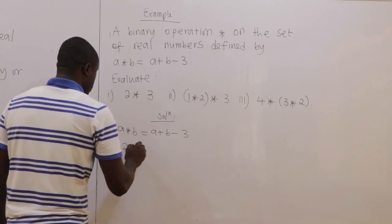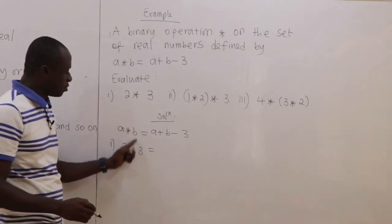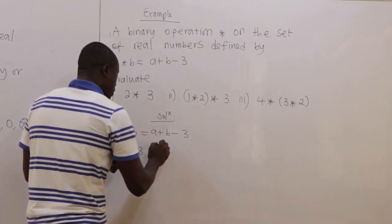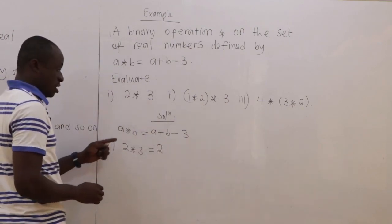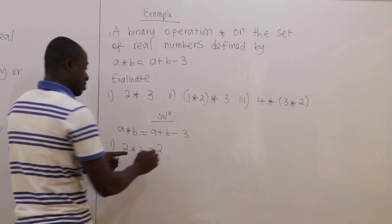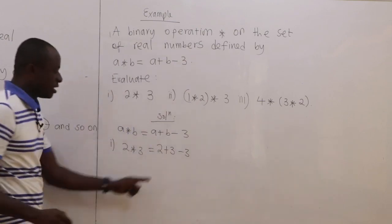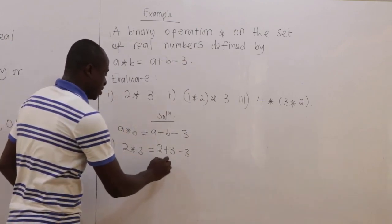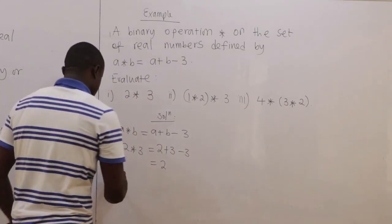Our first part is 2★3. In this case, our a is 2 and our b is 3. We substitute: wherever you see a, put 2; wherever you see b, put 3. So 2 + 3 − 3 — the 3s cancel — and we just have 2. That is so easy.